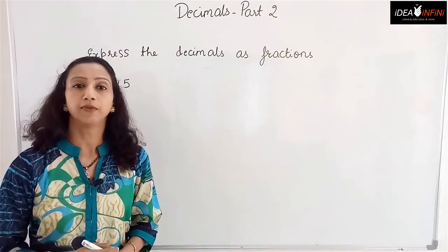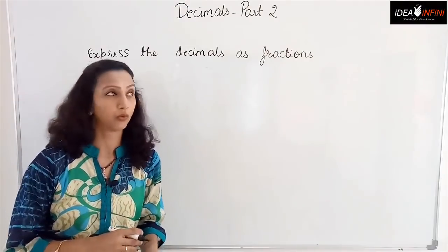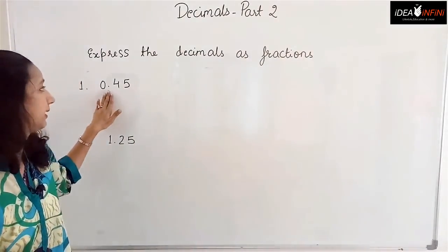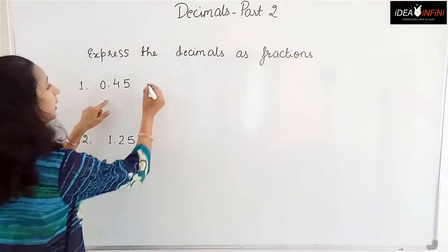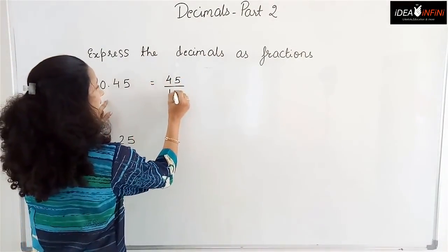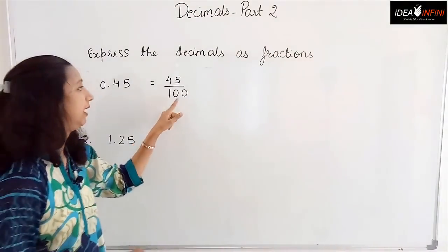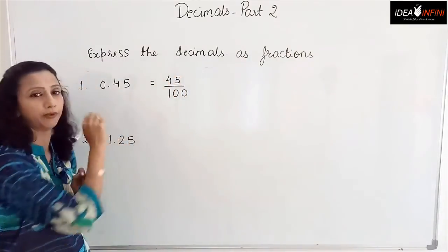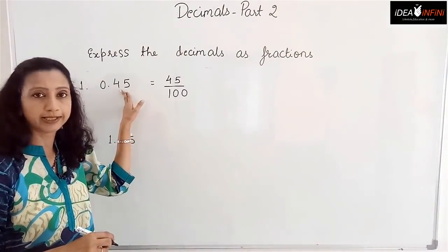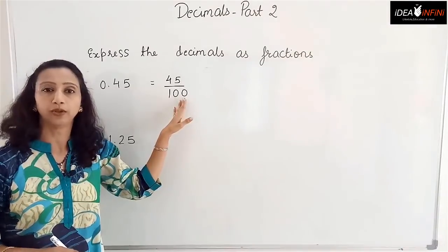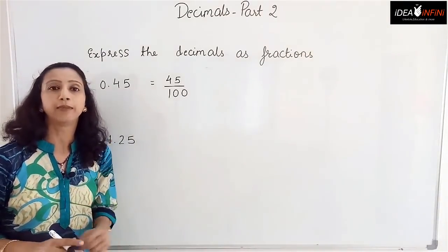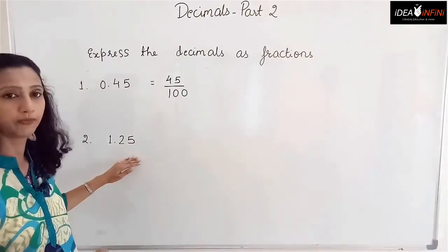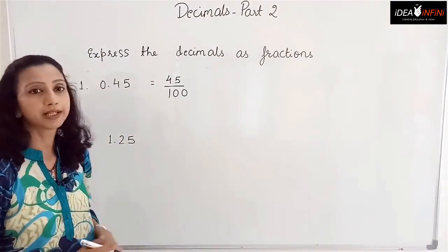Now we go the other way round — converting decimals into fractions. For 0.45: it has two decimal places, so we write it as 45 by 100. The number of decimal places tells us how many zeros go in the denominator with a 1. For example, 0.4 would be 4 by 10.